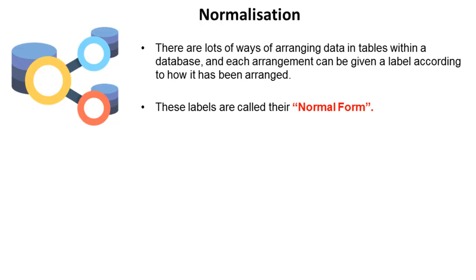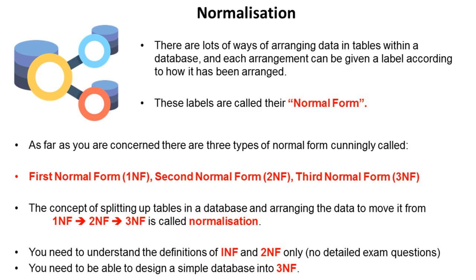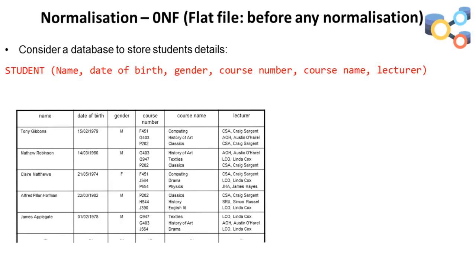There are lots of ways of arranging the data in tables within a database, and each arrangement can be given a label according to how it's been arranged — these labels are called normal forms. There are many normal forms, but for A-level you need to be aware of first normal form, second normal form, and third normal form. The concept of splitting up tables and arranging the data to move it from first to second to third normal form is the process of normalisation.